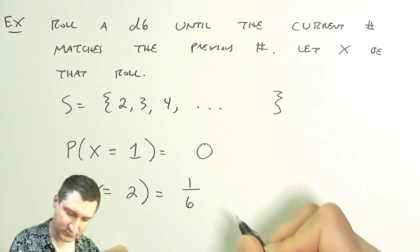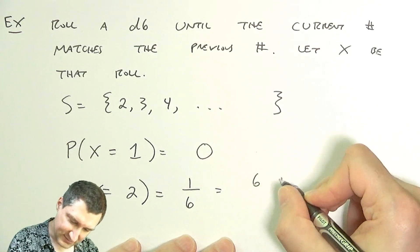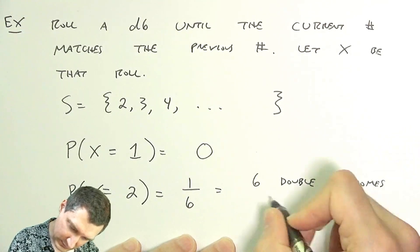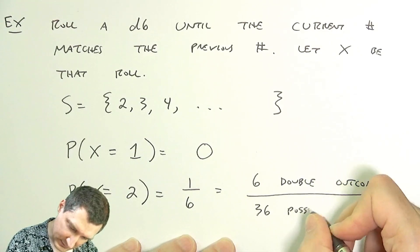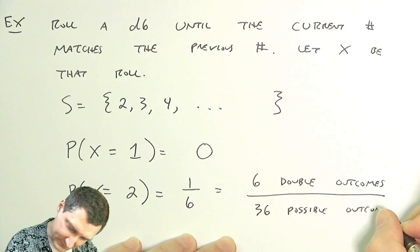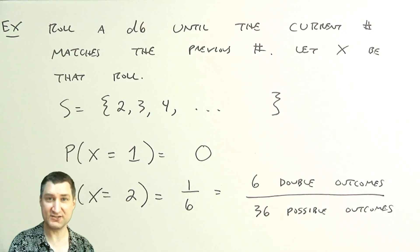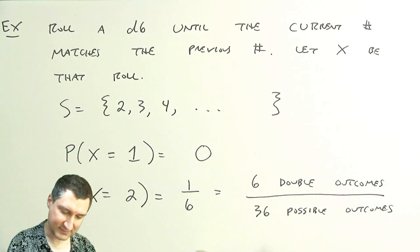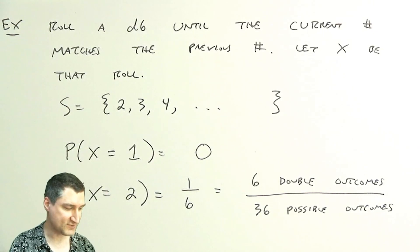Why is that? Well, that's like saying that I have six double outcomes over 36 possible outcomes. If I look at the pairs of first die comma second die, there are six outcomes that are good and thirty outcomes that are bad. So that means that the probability of getting it on the second try—the first time you can possibly get it—is one-sixth.